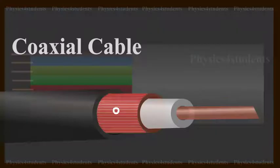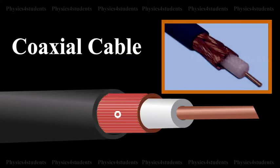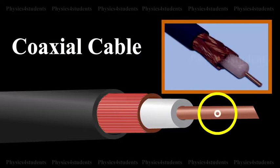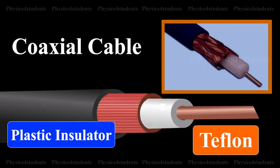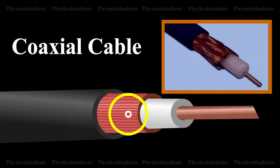For some applications, coaxial cable — that is, a coax — must be used. It consists of a solid center conductor surrounded by a plastic insulator such as Teflon. Over the insulator is a second conductor,